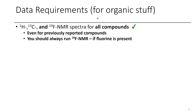There are different data requirements depending on what you're doing, but for an organic paper you should normally include 1H and 13C NMR for all compounds, even if previously reported. Some journals don't require this — those journals are wrong, they should require this. Additionally, if you have any fluorine in your molecule you should do a 19F NMR, and the same concept applies for phosphorus. If you have an NMR-active nucleus, you should get that NMR data.